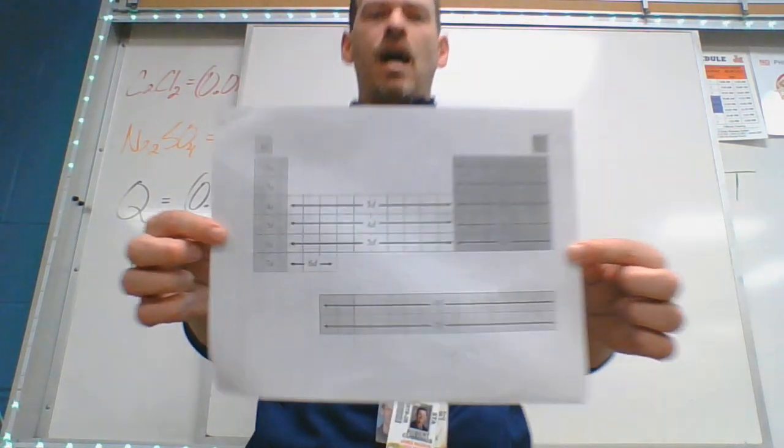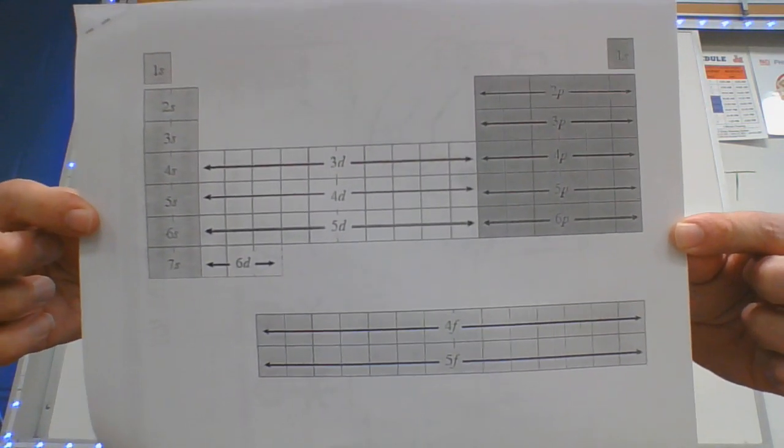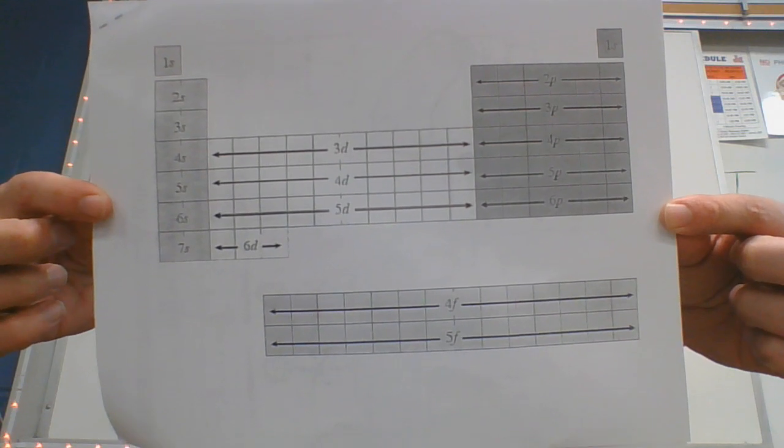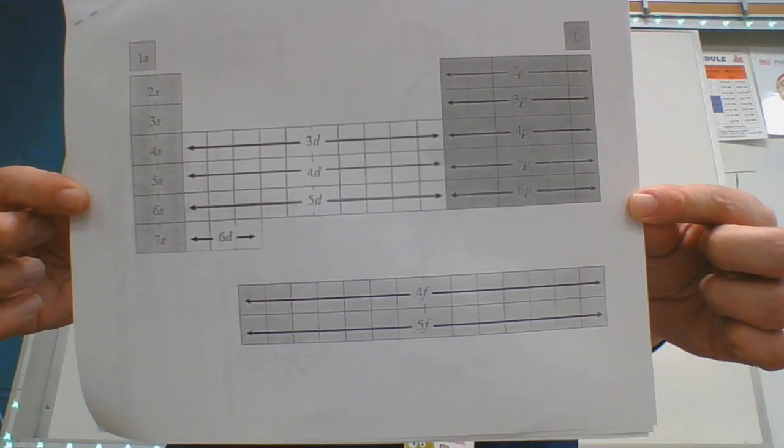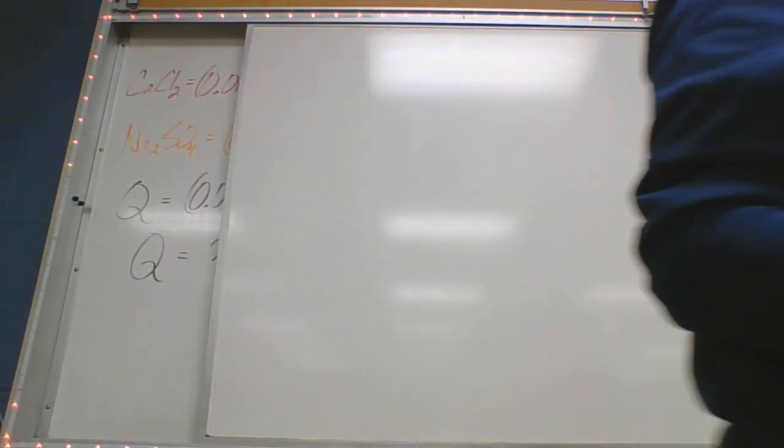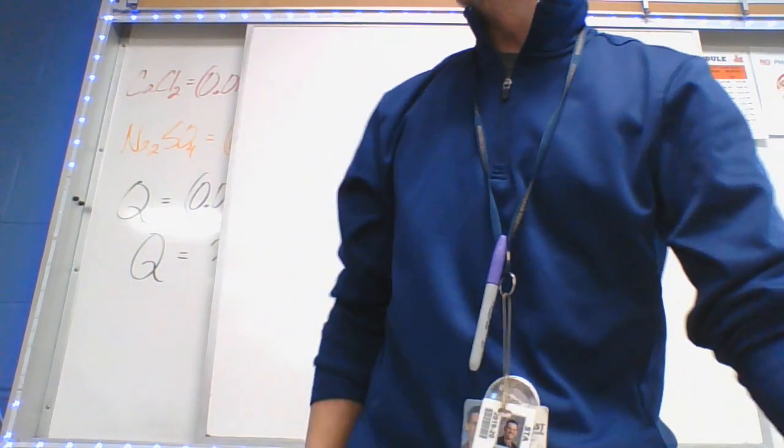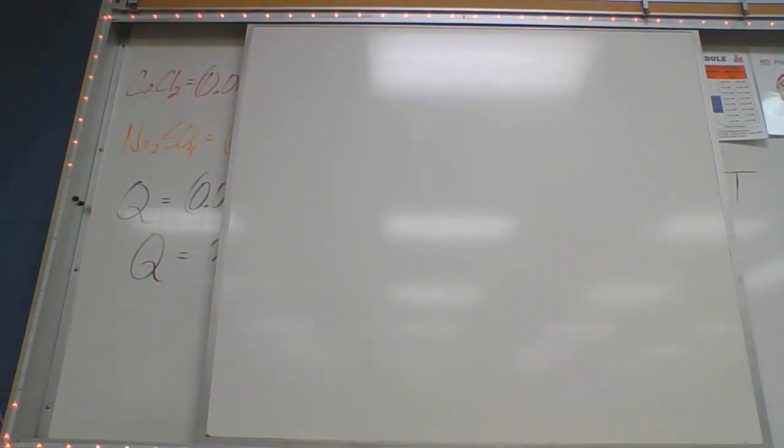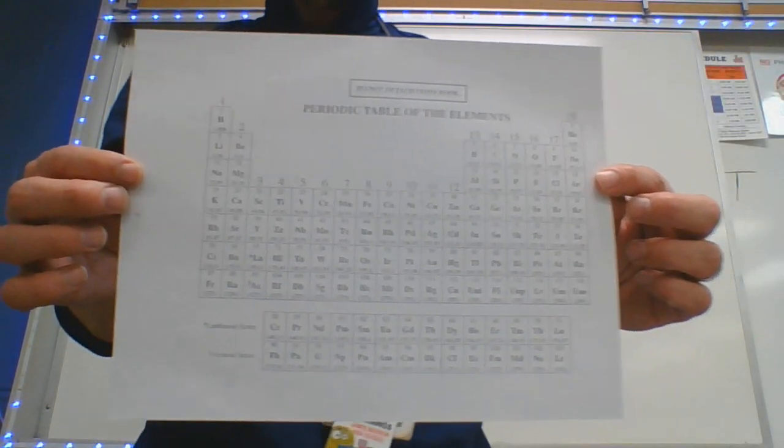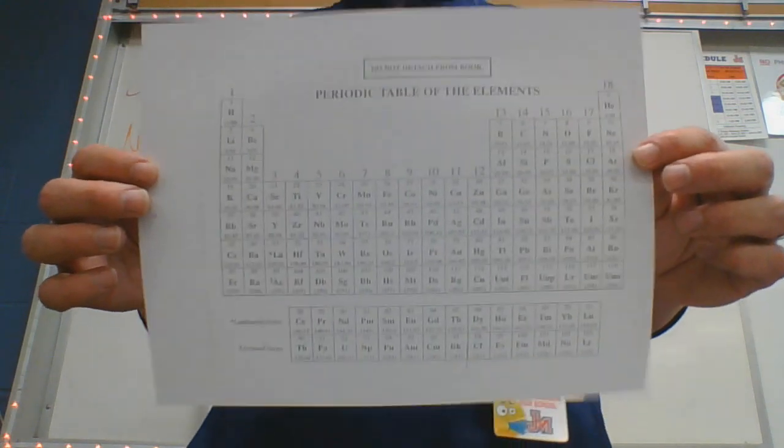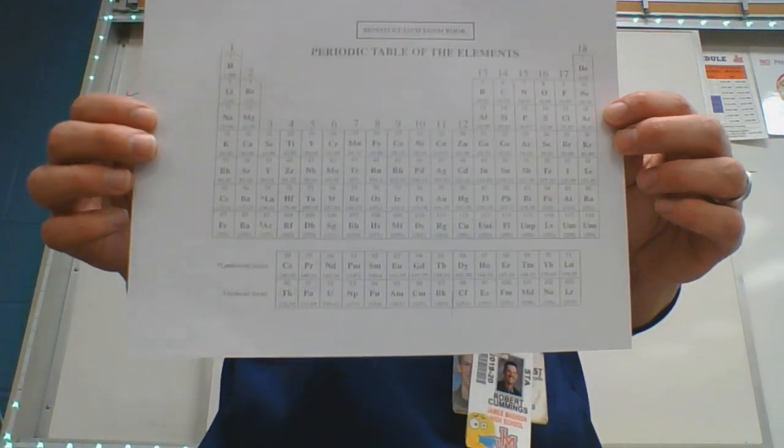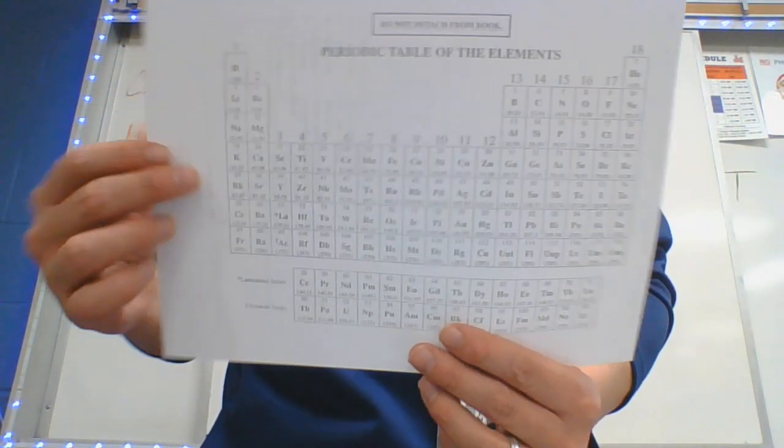Anyway, in your bonding packet, flip to the very very back that has the electron configuration cheat sheet. And then look at your periodic table also. And what we're going to do is I want you to look at aluminum, look at aluminum on the periodic table.